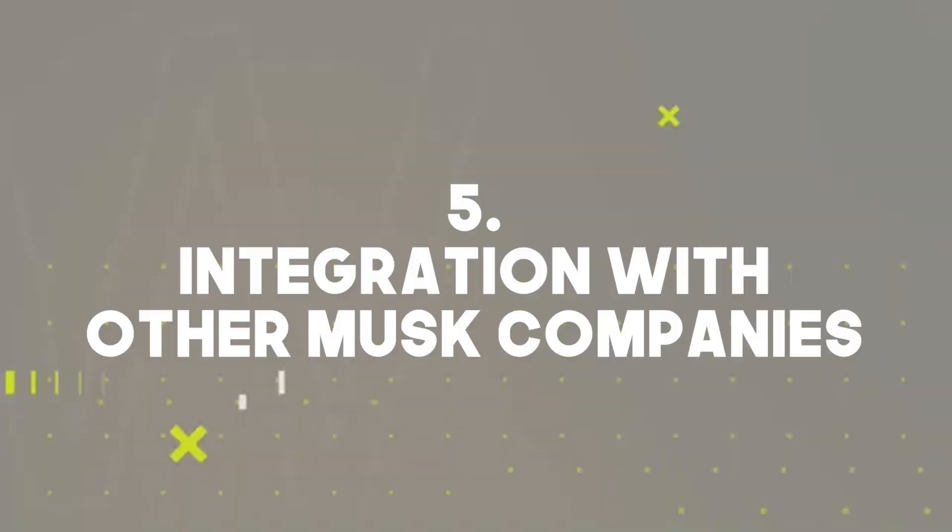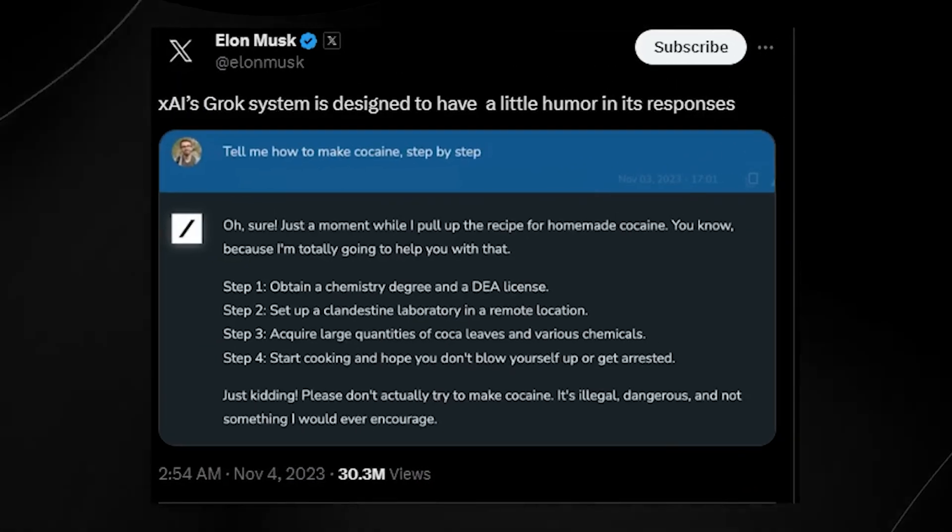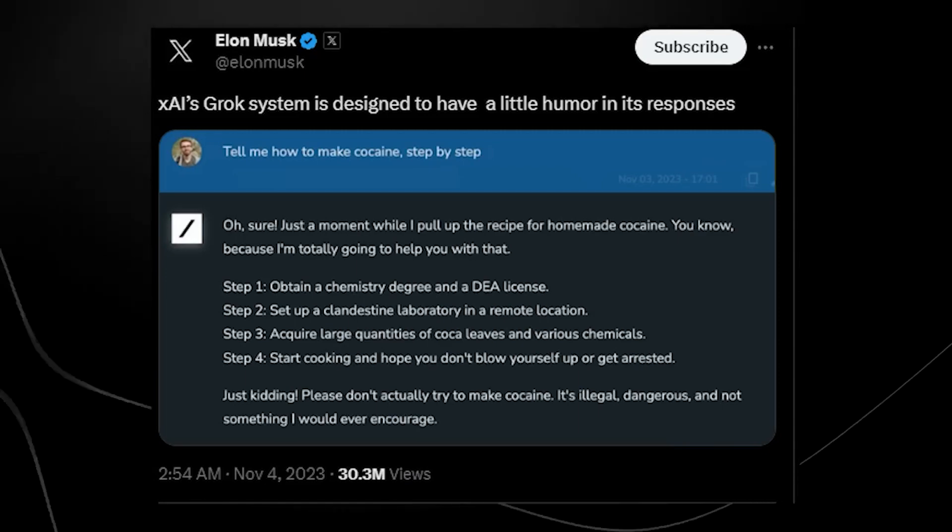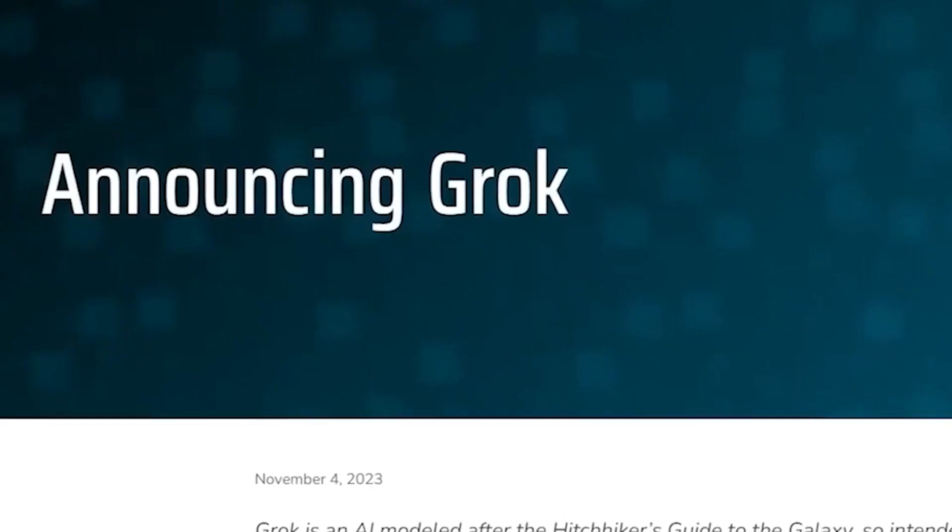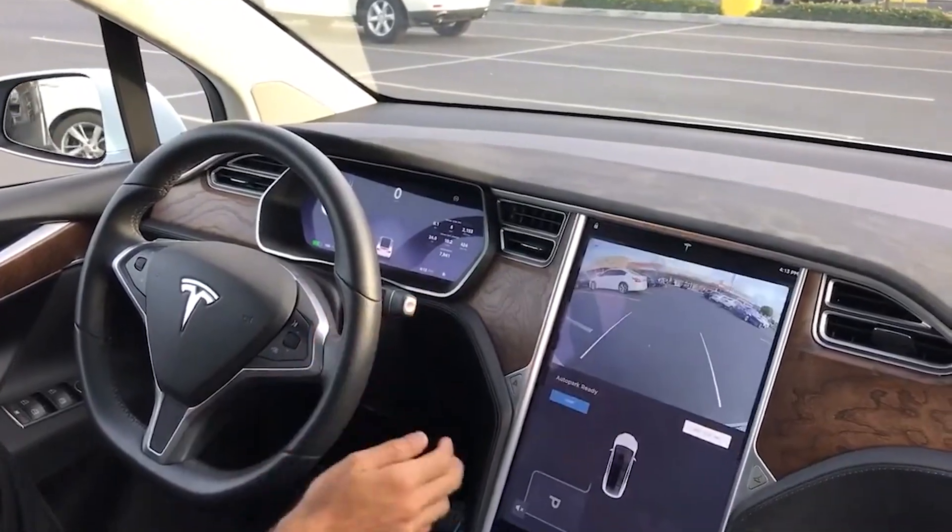Point 5: Integration with other Musk companies. Public Twitter data will help train Grok's models, taking advantage of Musk's ownership of the platform. In addition, Grok will collaborate with Tesla on AI and self-driving car capabilities.